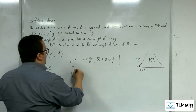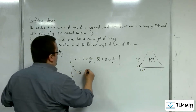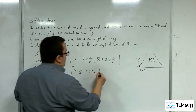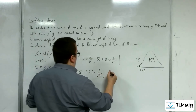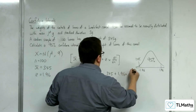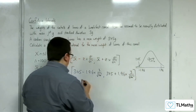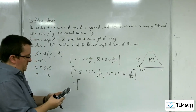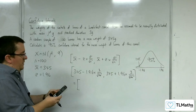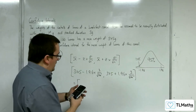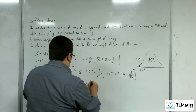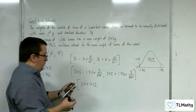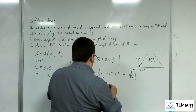The mean is 345, take away z, which is 1.96, times by sigma, which is the square root of 9, so 3, over root n, which is the square root of 100. And we've also got 345 plus 1.96 times 3 over the square root of 100. So 345 minus 1.96 times 3 over root 100 gives 344.412, and the upper bound gives 345.588.